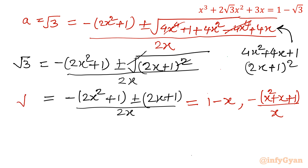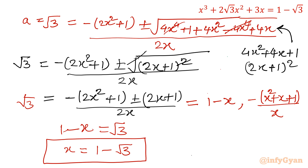Now equating one by one. First equation: 1 − x = √3, so x = 1 − √3. This is our first confirmed solution. The second equation to solve is −(x² + x + 1)/x = √3.